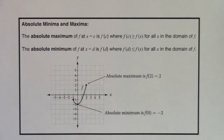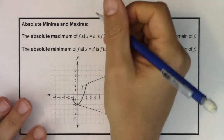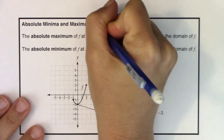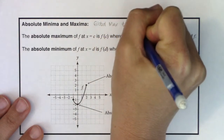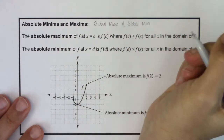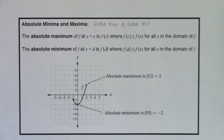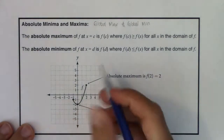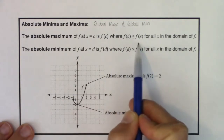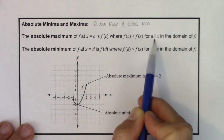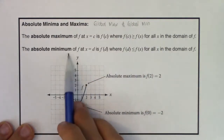We're at the last example in this section, so I want to define absolute maxes and mins. They have two different vocabulary terms: you can call them absolute maximum and minimum, or global max and global min. This is the ultimate max — not relatively speaking over a close interval, but everywhere. The absolute maximum of f at a point c is the value f(c) where f(c) is greater than every other f(x) value for all x in the domain.